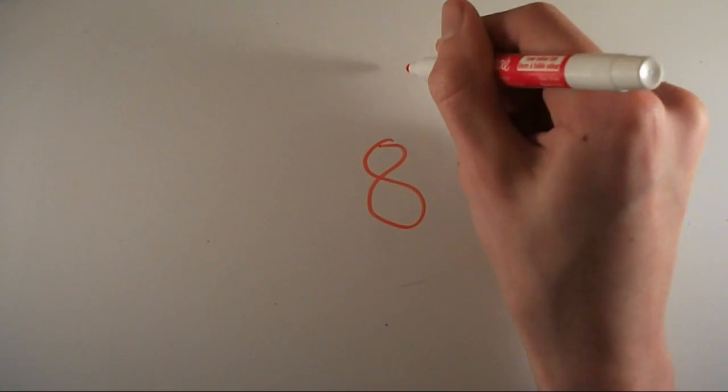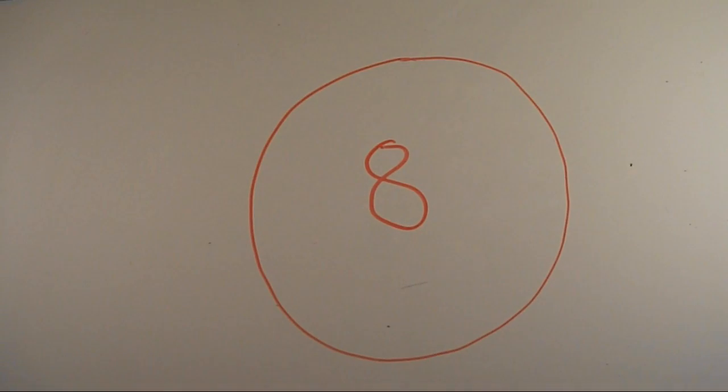You might notice that those eight planets in our solar system are all spheres. So why is it that planets are spheres?